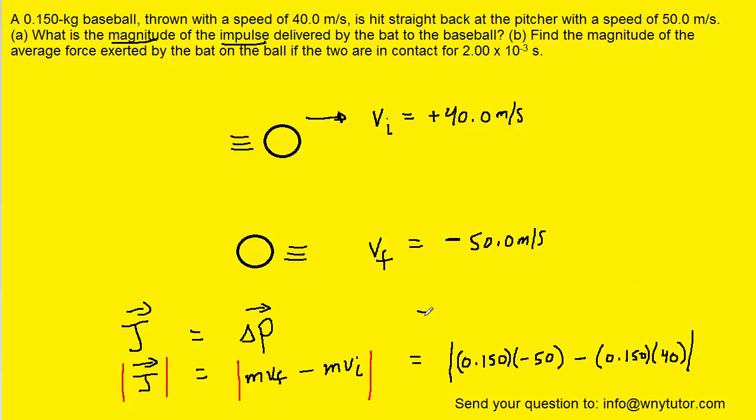And when we simplify that on our calculators, we get positive 13.5, and then the unit, because we're multiplying mass and velocity, will be kilograms multiplied by meters per second. So this would be the correct answer to part A of the question.